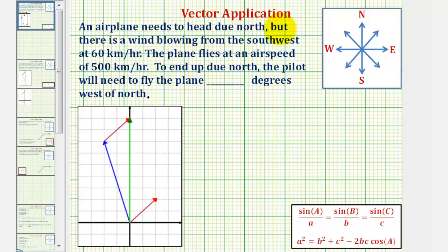An airplane needs to fly due north, but there is a wind blowing from the southwest at 60 kilometers per hour. The plane flies at an air speed of 500 kilometers per hour, which should be the plane's speed in still air. To end up due north, the pilot will need to fly how many degrees west of north?